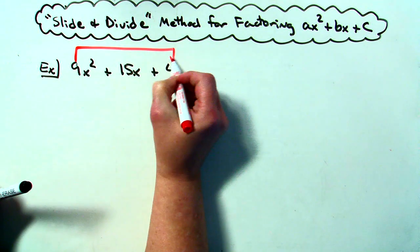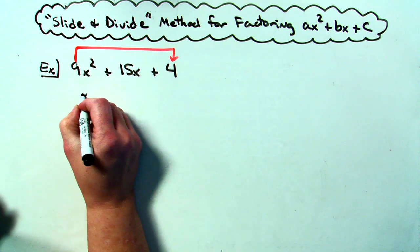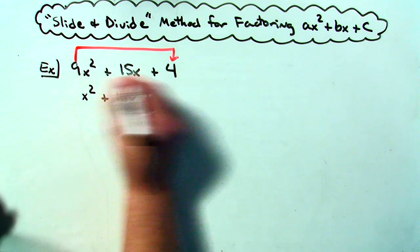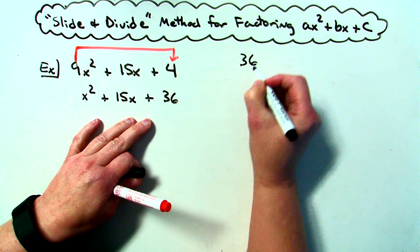We're going to slide the 9 down and multiply it by that 4. It's gone there. So now it's just an x squared plus 15x and then plus 36. So I'm going to go back to my standard method of factoring this.